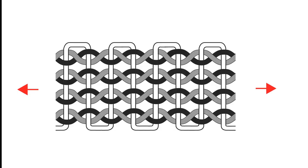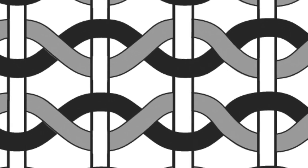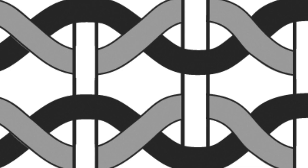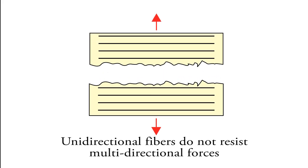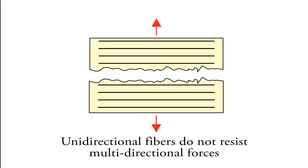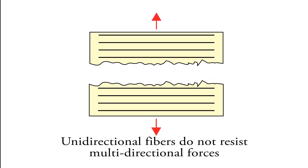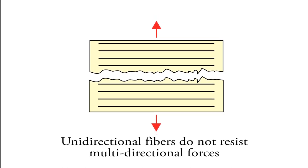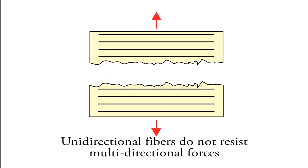Ribond's patented lockstitch Lenaweave reinforces in multiple directions. Because of the mechanical interlocking of one thread to the next, any crack propagation in the resin is stopped. Unidirectional fiber orientations or loosely braided materials lack these mechanical connections of one thread to the next, and therefore do not prevent cracks from propagating parallel to the direction of the fibers.